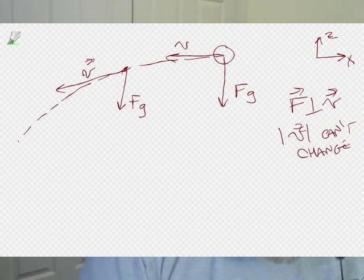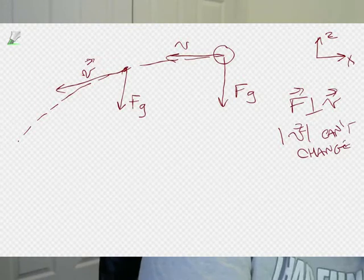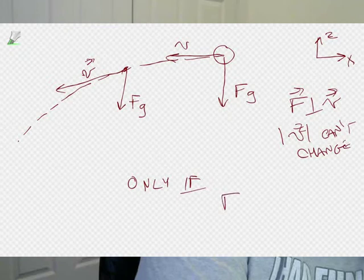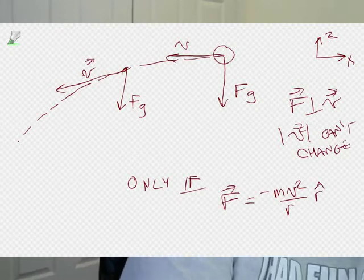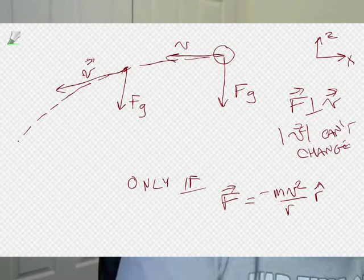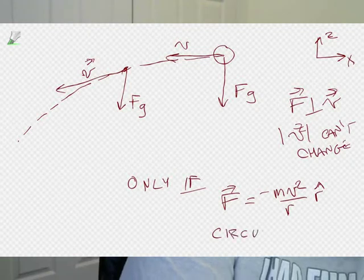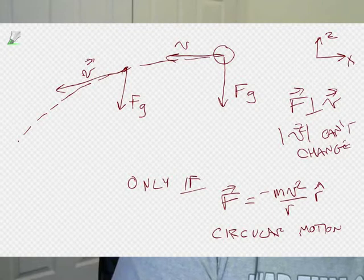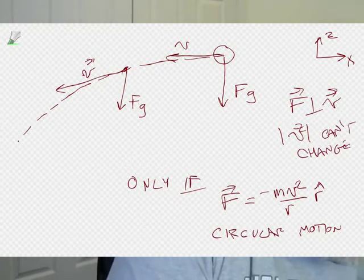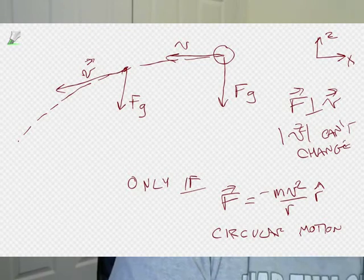The same thing was true with the precession. Only if you have the force equal to minus mv²/r r̂, where r̂ is the displacement from the center of the circle to where the particle is — only then do you get circular motion, and that's not true here because the force is not always in the r̂ direction, it's in the minus ẑ direction. By the same token, the conclusion that the thing was going to move in a circle because the torque was perpendicular to L was a rash conclusion.